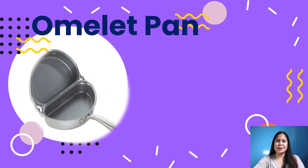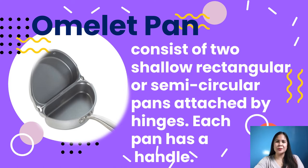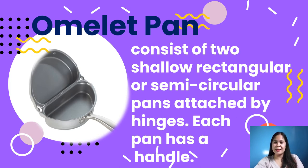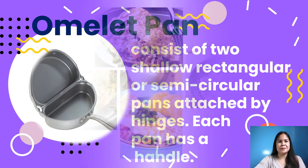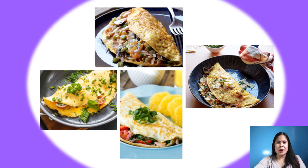Next is an omelette pan. It consists of two shallow rectangular or semi-circular pans attached by hinges, each with a handle. A traditional omelette pan has low curved edges and a wide diameter bottom to enable the omelette to be rolled easily. It is best to have a non-stick bottom and a metal handle so it can be used in a broiler if desired. In cuisine, an omelette is a dish made from beaten eggs, fried with butter or oil in a frying pan, often folded around fillings such as cheese, chives, vegetables, mushrooms, or meat.